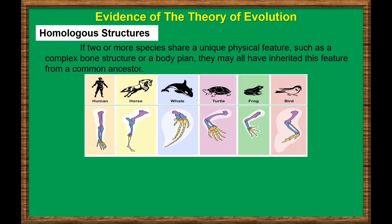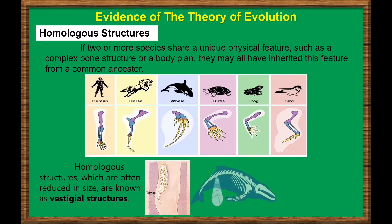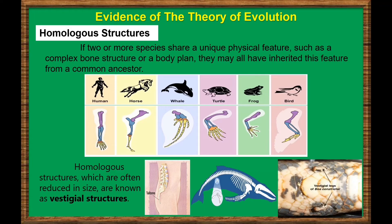Sometimes organisms have structures that are homologous to important structures in other organisms, but that have lost their major ancestral function. These structures, often reduced in size, are known as vestigial structures. Examples of vestigial structures include the tailbone of humans, the hind leg bones of whales, and the underdeveloped legs found in some snakes.